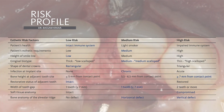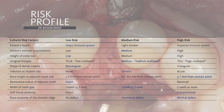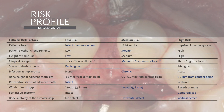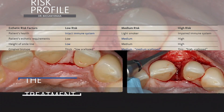Looking at the bone loss, it is exceeding the 7-millimeter mark and we have a compromised dentition for number 9 and 10 because of that vertical, wide, horizontal bone defect. So the patient falls more so within the medium to high risk category.